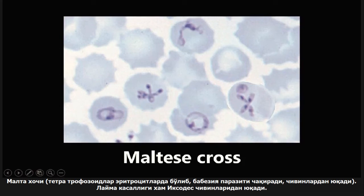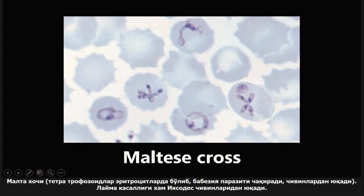Babesiosis is transmitted by the Ixodes tick. That's important because there's another disease also transmitted by the Ixodes tick — Lyme disease, caused by Borrelia burgdorferi. So to recap: Maltese crosses are tetrads of trophozoites seen in red blood cells, associated with babesiosis, transmitted by the Ixodes tick, which also transmits Lyme disease.